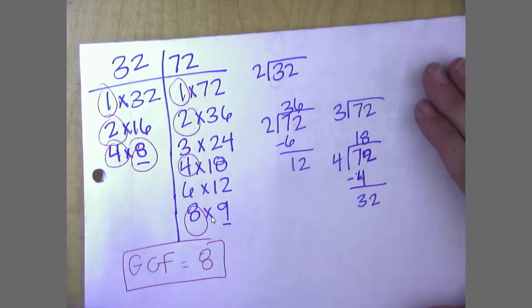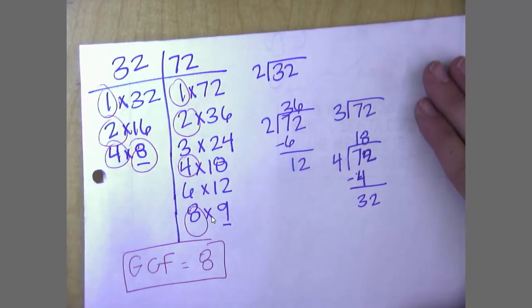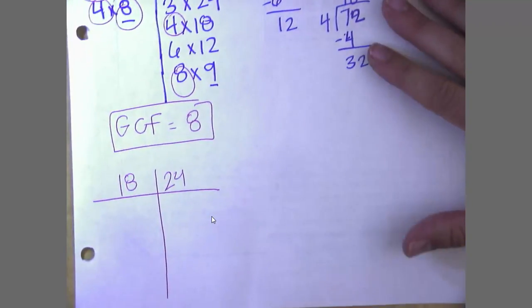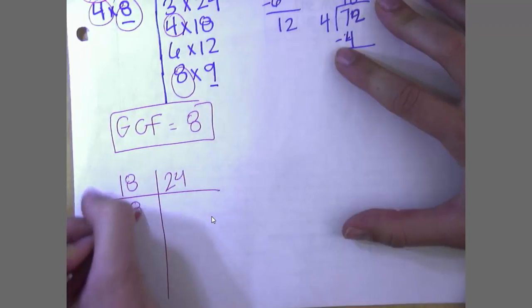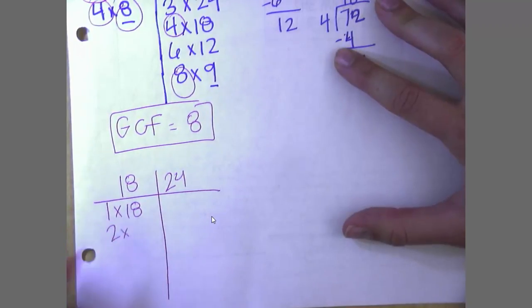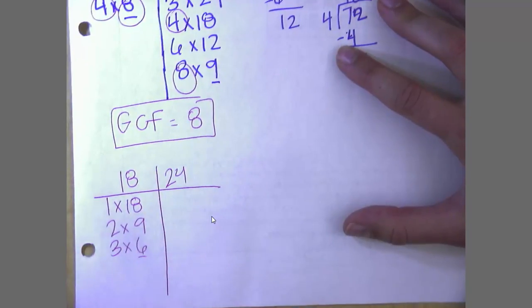Let's look at another. Let's do 18 and 24. Again, start with 1, 1 times 18. Look at 2, 2 times 9. 3's, 4's, 5's, and 6's.